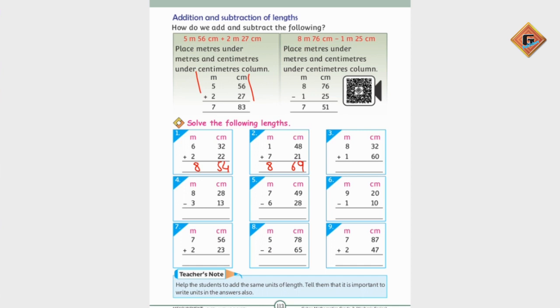Now we do a minus question. Here 8 minus 3 gives 5 remaining. 2 minus 1 gives 1. 8 minus 3 which is 5. 5 meter and 15 centimeter.